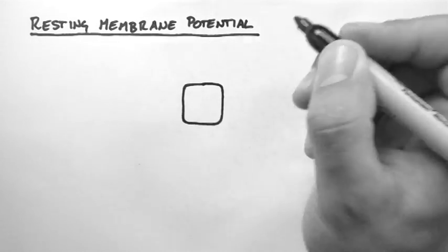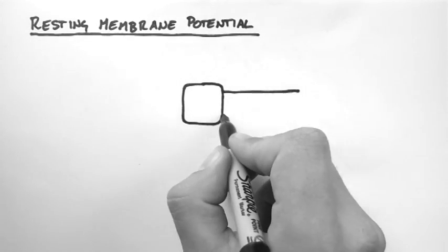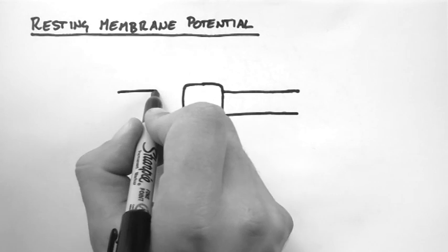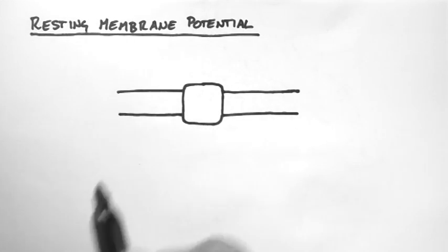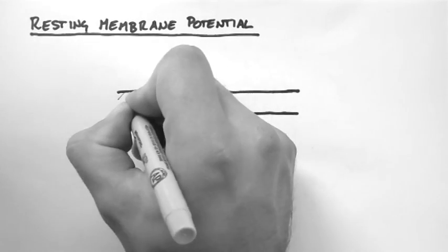So I'm going to draw an ion transporter in a membrane of a cell. And for our purposes we'll call this a neuron. But many different cells have this transporter.